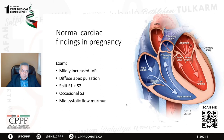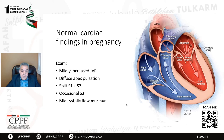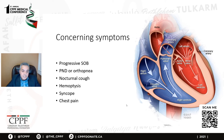Regarding examination of the heart during pregnancy — mildly increased JVP is normal, as are diffuse apex pulsation, split heart sounds, occasional S3 gallops, and mid-systolic murmur. Concerning symptoms include progressive shortness of breath, PND or orthopnea, nocturnal cough, hemoptysis, syncope, and chest pain. Concerning signs include cyanosis, clubbing, persistently elevated JVP, systolic murmur greater than 3 over 6, any diastolic murmur — which is not physiological — persistent cardiac arrhythmia, and cardiomegaly.